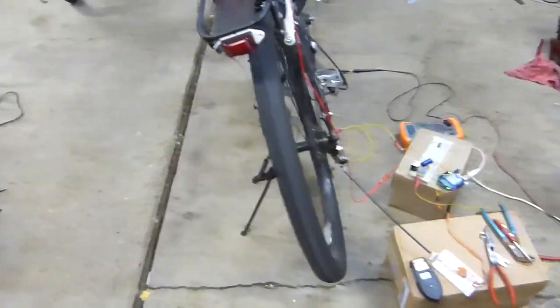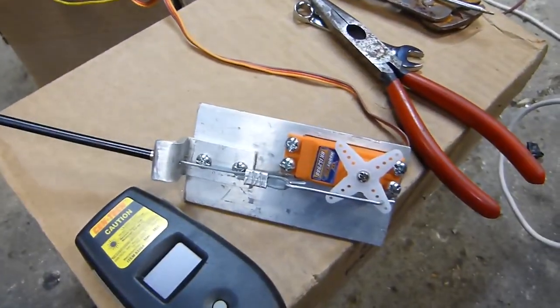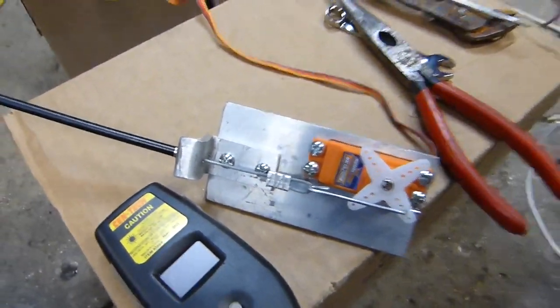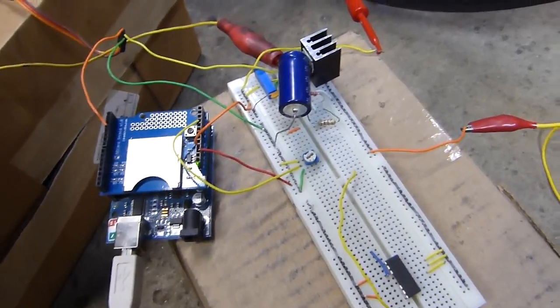Alright, here I'm testing out the new servo shifter. It's mocked up on the bicycle here. You can see the servo right here and we have a regular Arduino. You saw this in my bench test.